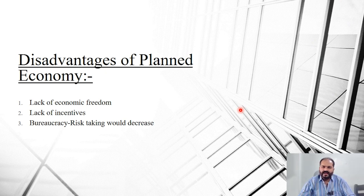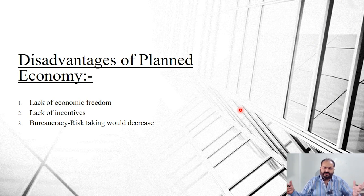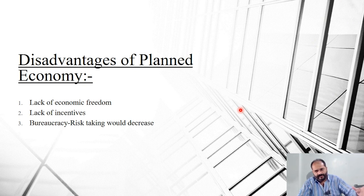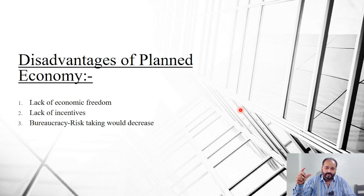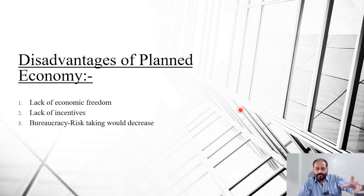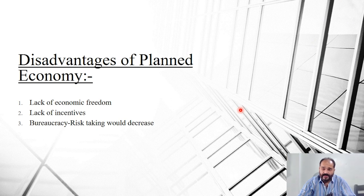The third kind of economic system is mixed economy. Mixed economy is basically where planned and market economies come together. Some firms are owned by the private sector and some by the government. Policy making — what is allowed, what is not, tariffs, etc. — is decided by the government, while how to produce, what to produce, and for whom to produce is decided by the private sector. These are the three kinds of economic systems.